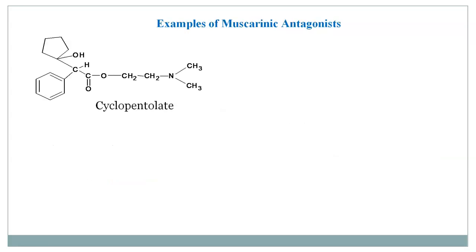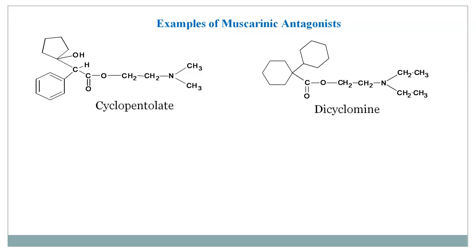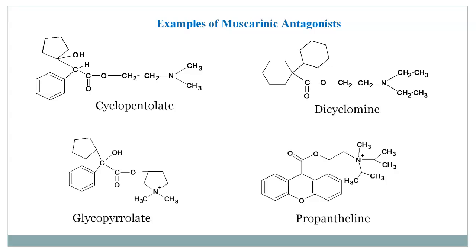Examples of muscarinic antagonists include cyclopentolate, dicyclomine, glycopyrrolate, and propantheline. All of these fulfill the general structural requirements: bulkier R1 and R2 groups with one aromatic ring, an ester oxygen as X, a chain length of 2 carbons, and a tertiary amine.